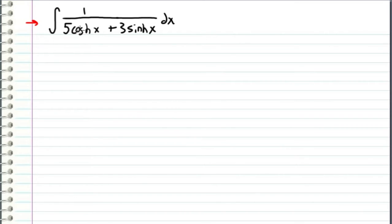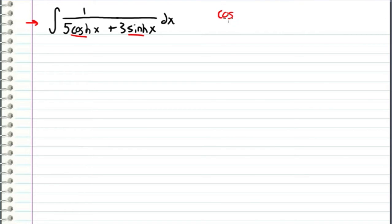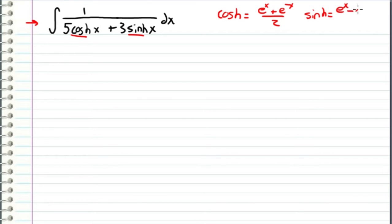The first thing I see is that we're dealing with hyperbolic trigonometric functions. We've got hyperbolic cosine and hyperbolic sine, abbreviated as cosh and sinh. A little background: cosh is equal to (e^x + e^(-x)) / 2, and sinh is equal to (e^x - e^(-x)) / 2.